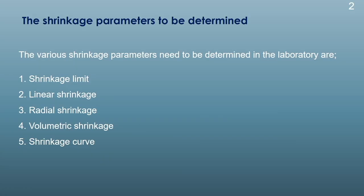When we talk about different parameters which we need to measure during a shrinkage test, we have to think about 5 different parameters. These are the shrinkage limit, the linear shrinkage, the radial shrinkage, volumetric shrinkage, and the shrinkage curve. These 5 parameters need to be determined to know the shrinkage behavior of the soil. Generally all these parameters are determined in a laboratory, and in this lecture we will be learning about how to determine all these parameters.